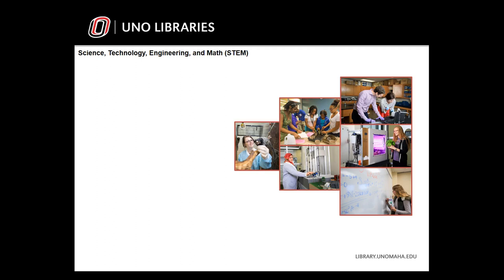In science, technology, engineering, and math disciplines, the timeliness of the literature review is important. Technology and scientific advancements develop very quickly, so there is a larger emphasis placed on the currency of the materials you use. You will conduct a comprehensive review of the literature to critically analyze existing scholarship while ensuring your scope includes the most recently published articles. This will help you position your topic within the academic conversation as something that builds on the most recent findings and has not been done before. You should not neglect the historical aspects of the research topic, but you will most likely place a greater emphasis on current research compared to colleagues in humanities or social sciences.